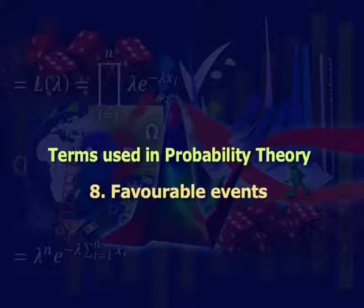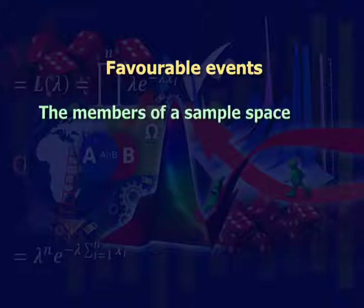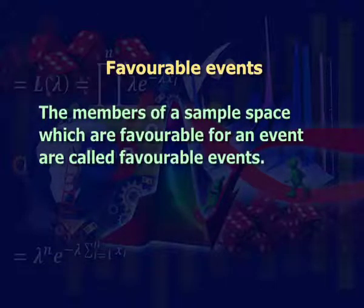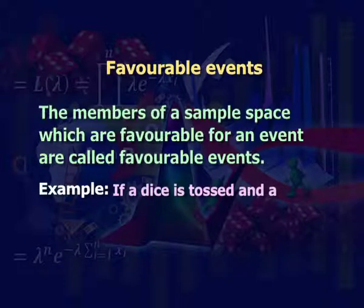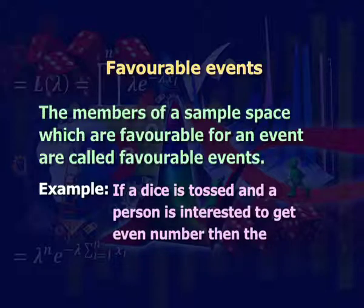Eighth: favorable events. The members of a sample space which are favorable for an event are called favorable events. For example, if a die is tossed and a person is interested to get an even number, then the favorable events are 2, 4, and 6.